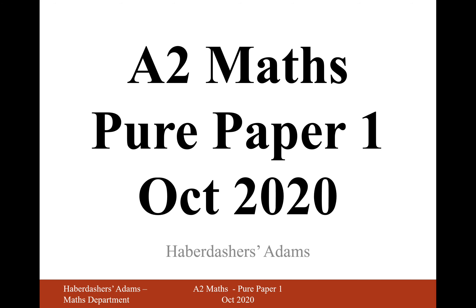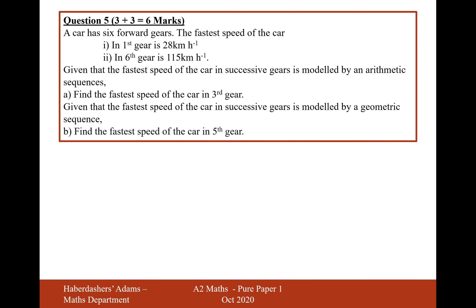Hello there, welcome to the October 2020 paper. Here we're looking at question 5. A car has six forward gears. The fastest speed of the car in the first gear is 28 km per hour and in the sixth gear is 115 km per hour.